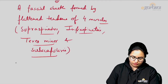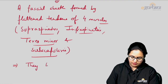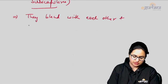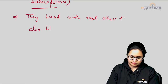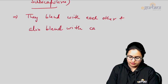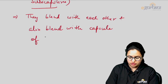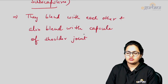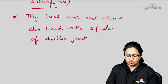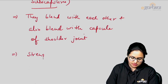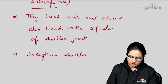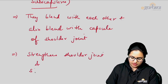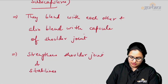These flattened tendons of the four muscles blend with each other as well as with the capsule of the shoulder joint. Because it blends with the capsule, it is basically strengthening and stabilizing the shoulder joint.